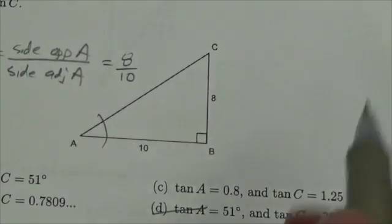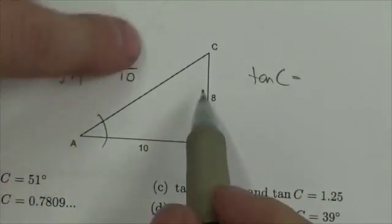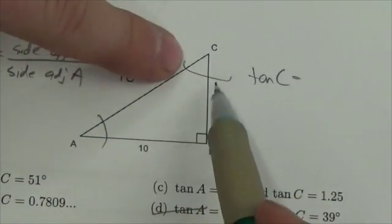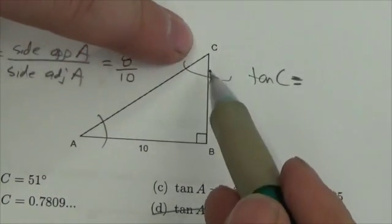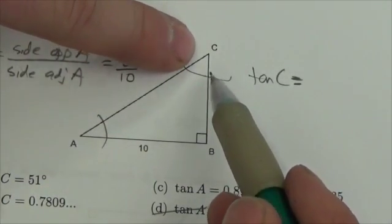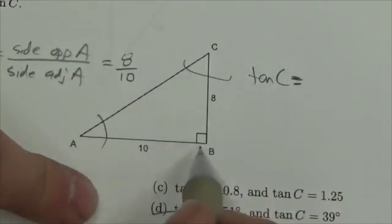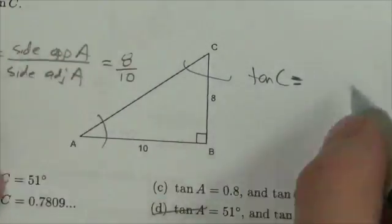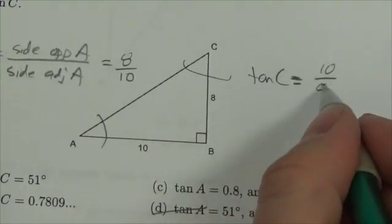Now let's take a look at tan C. Tan C is going to be equal to the ratio of the side opposite C - that's the side that's not being used to make up the angle - so it's going to be 10 over the adjacent side, which is 8. Again, the adjacent side is one of the sides that helps make the angle, and we're not including the hypotenuse.